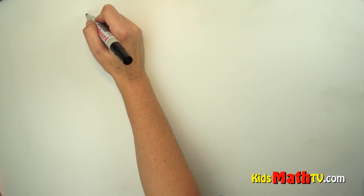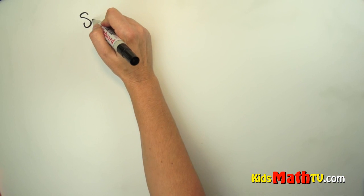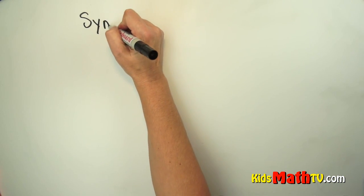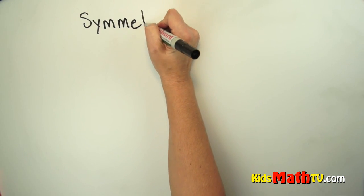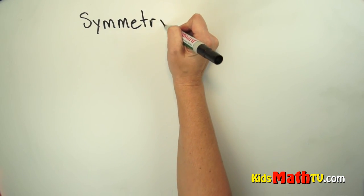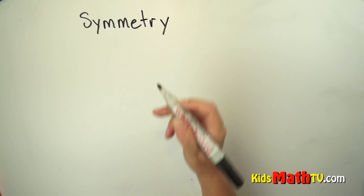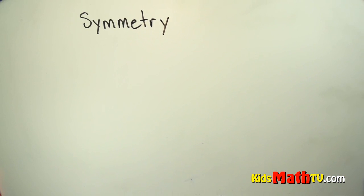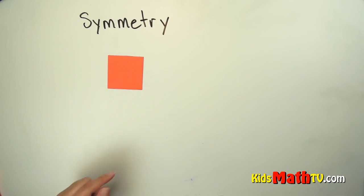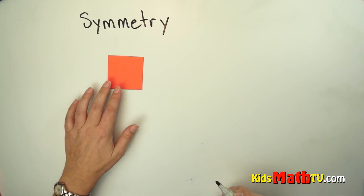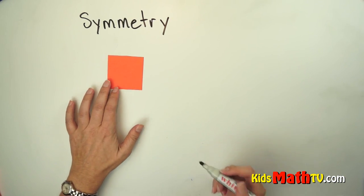In this lesson you will learn about symmetry. Symmetry simply means that one half of a figure is the reflection of the other, or if a figure were to be split in half, both sides would be exactly the same.